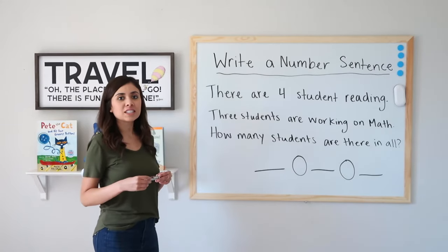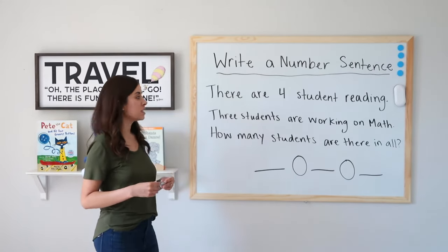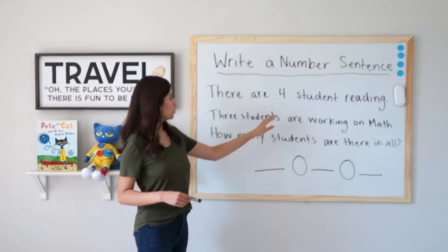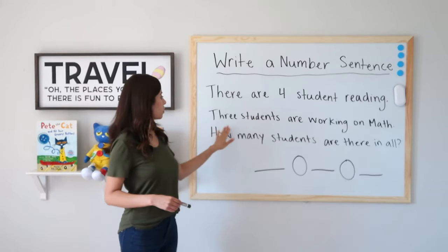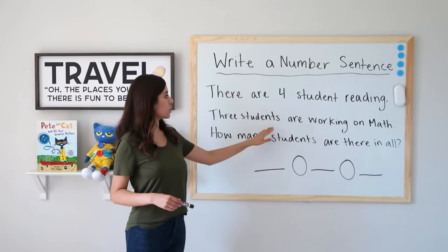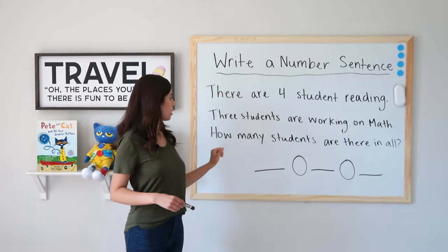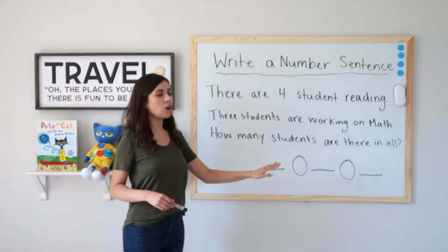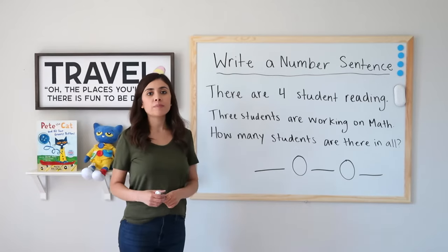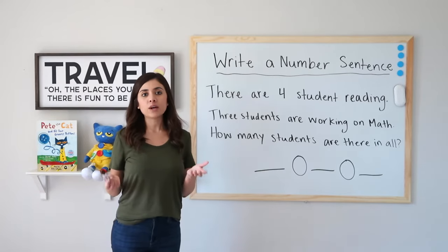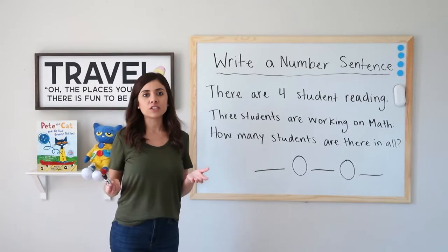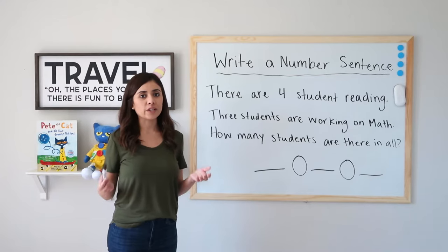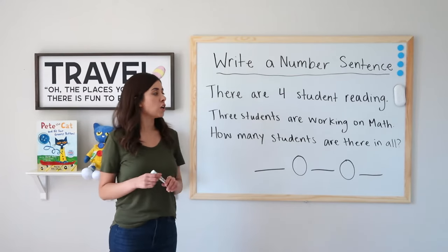The first example says: there are four students reading, three students are working on math. How many students are there in all? Remember, if you have seen past videos, you know that first we like to circle what we already know.